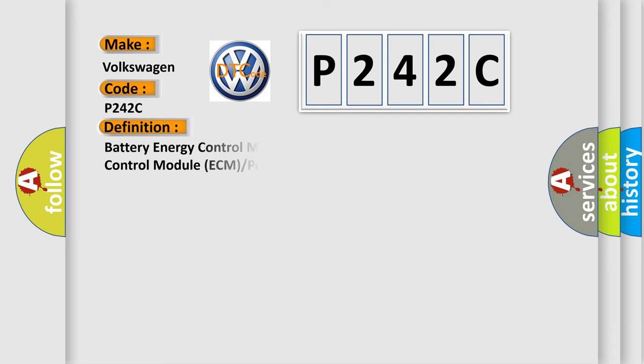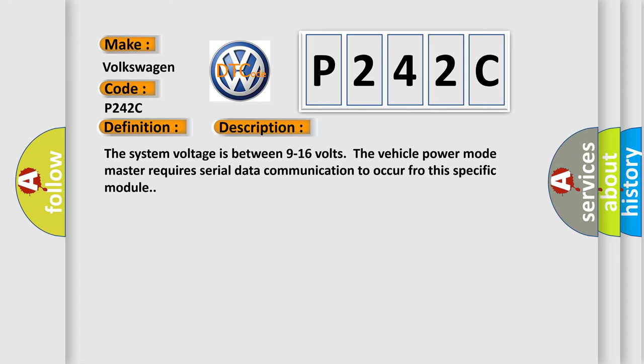The basic definition is battery energy control module lost communication with engine control module ECM or powertrain control module PCM. This is a short description of this DTC code: The system voltage is between 9 to 16 volts. The vehicle power mode master requires serial data communication to occur through this specific module.